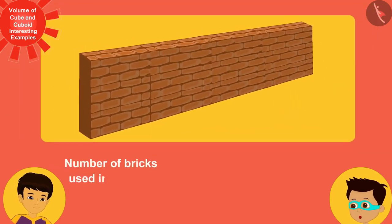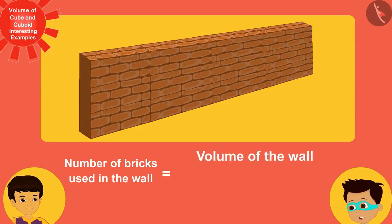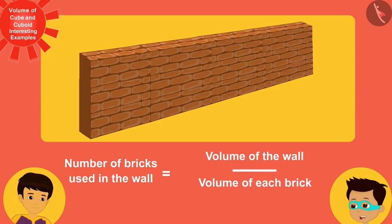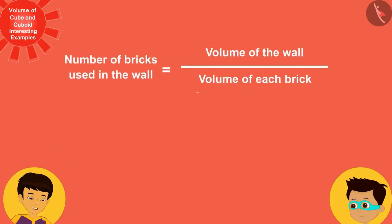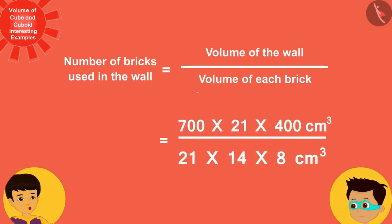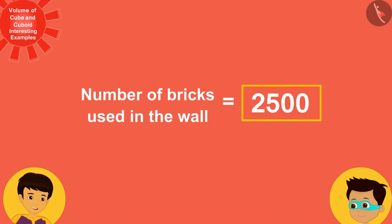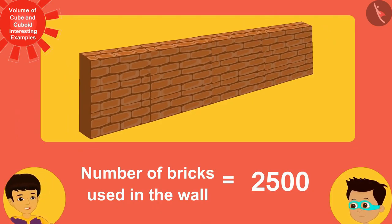Well done, Manas. Now, to find the number of bricks in the wall, we only have to divide the volume of the wall by the volume of each brick. On solving this, we can see that 2,500 bricks have been used in the wall. This was done very quickly and easily instead of wasting a lot of time and counting each brick.